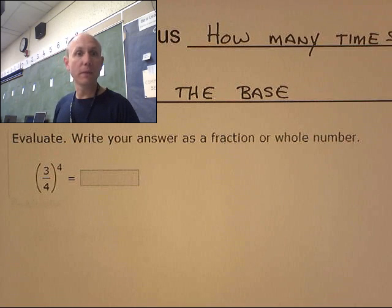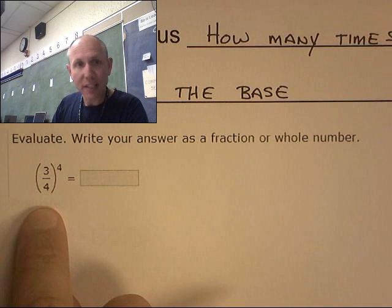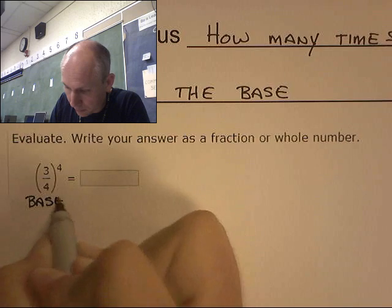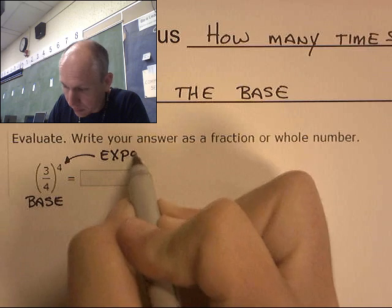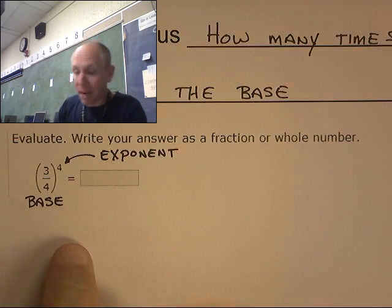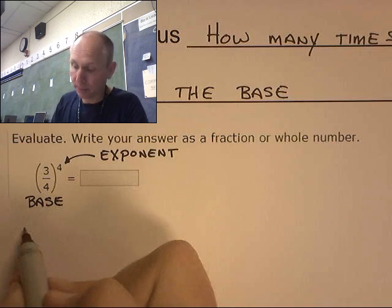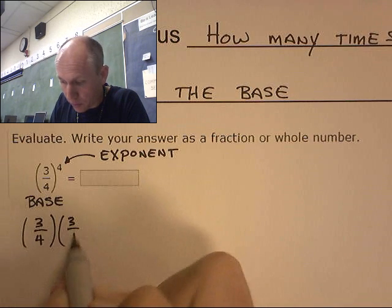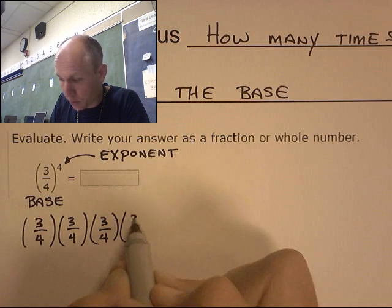There we go. So I have three-fourths to the fourth. Well, my base is three-fourths. And my exponent is four. My exponent is telling me to write that base out four times.